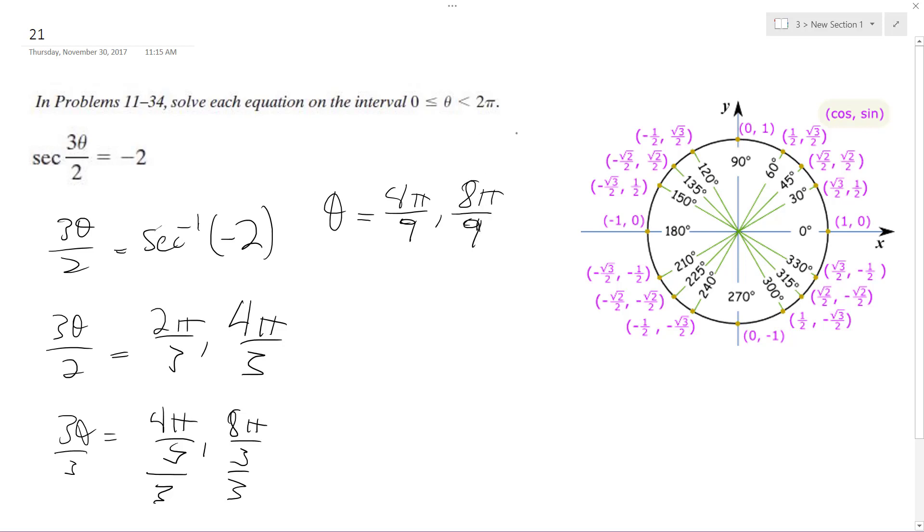And we're allowed to go 0 to 2 pi. Something I forgot to do is when I did all this, I should have added 2 pi k to both of these solutions.